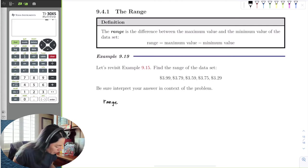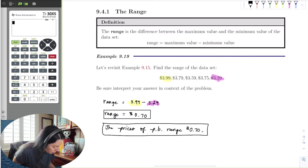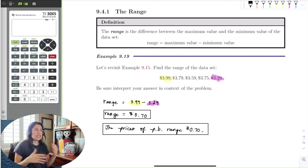So the range here will be equal to the largest value, which was $3.99, minus the smallest cost of a jar, which is $3.29. And so that ended up being how many cents, $0.70. So here's the range, numerical value, and then we could say that the prices of peanut butter range $0.70, something like that, or have a range of, something like that. But really, it's just you're saying that the range of the data is $0.70.